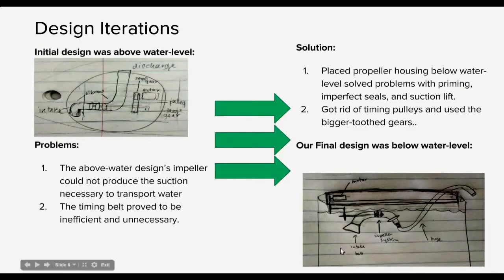These are our different design iterations. So our initial design, as you can see, was above water level. And we have our intake valve here, which would be submerged in the water. Then we've got an elbow connecting to our impeller housing, which is connected to the shaft here, connecting to the gears, which is connected to our motor. And we have a pulley in between. And then from here, it discharges out.